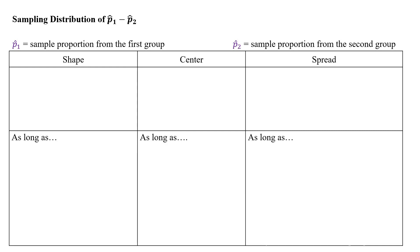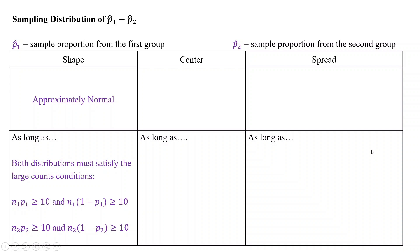We have p-hat sub 1 and p-hat sub 2 representing the sample proportions from each group. The shape of the combined difference is approximately normal as long as both distributions satisfy the large counts condition. For a confidence interval, you check that n1 times p-hat sub 1 and n1 times (1 minus p-hat sub 1) are both greater than or equal to 10, and similarly for the second group. Since we don't know the population values p sub 1 and p sub 2 in a confidence interval, we check this condition using p-hat sub 1 and p-hat sub 2, just as we did with single-proportion confidence intervals.